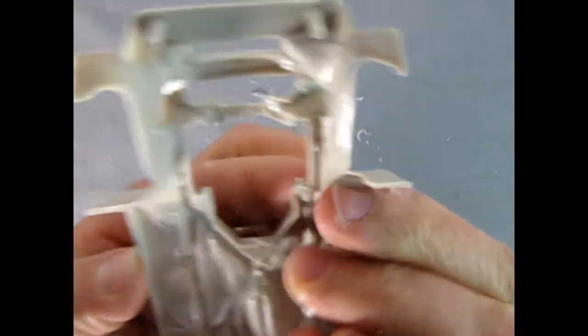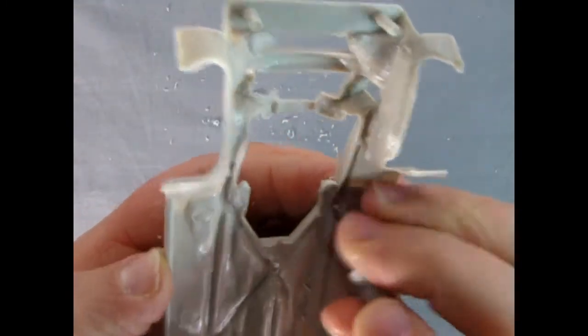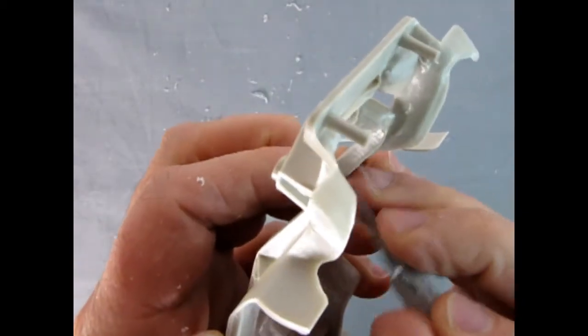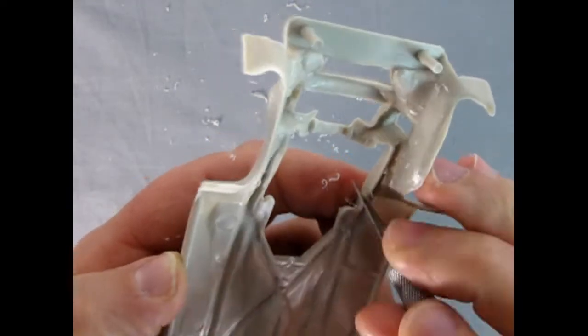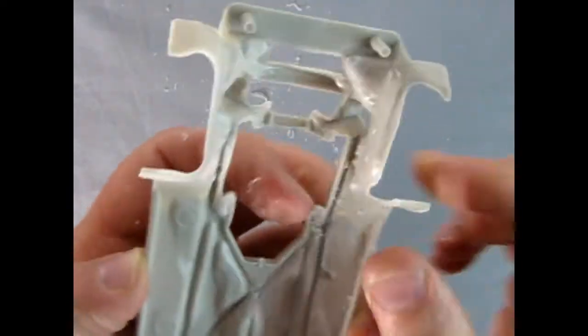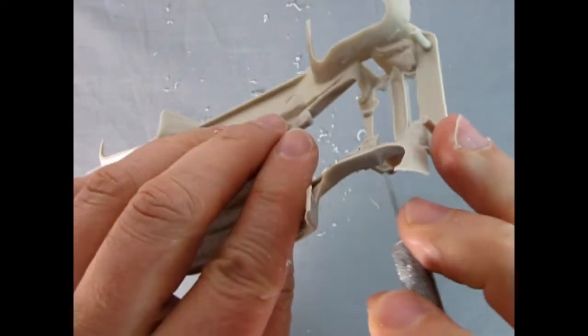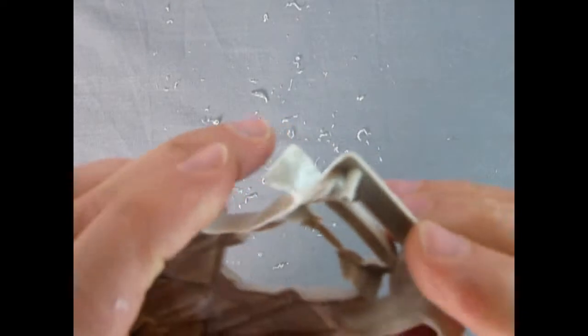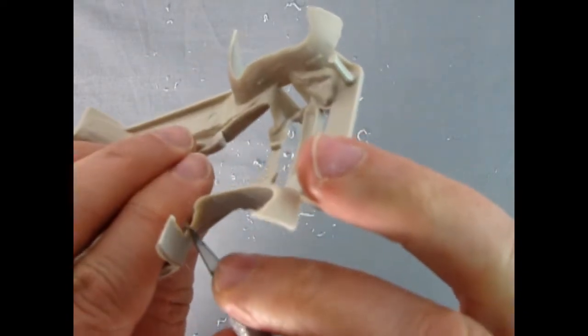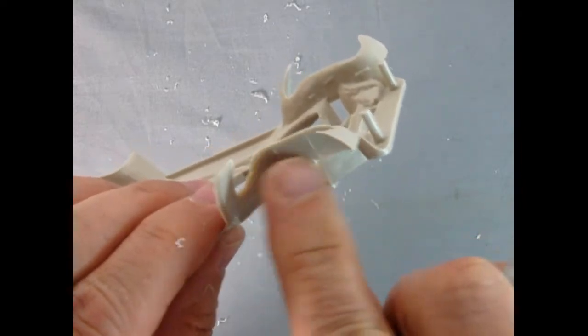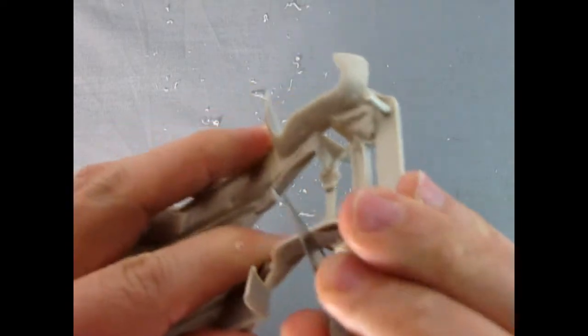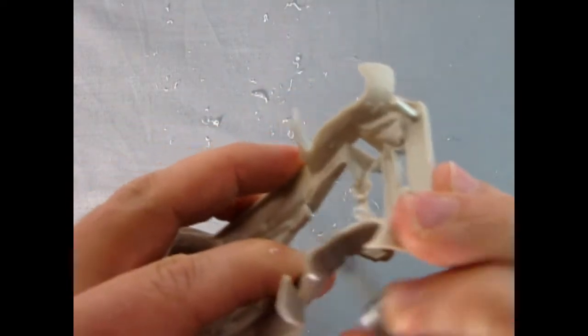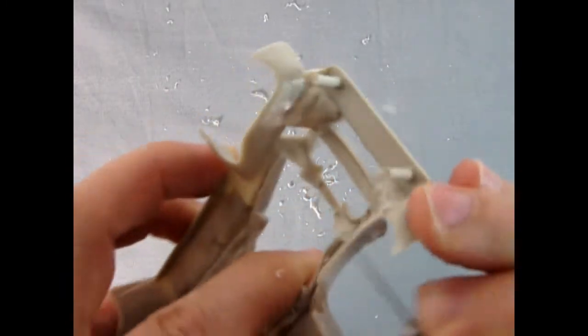Actually those are kind of inconsequential right now. For test fitting the body to this frame, where I really need to go is up in here on the top of these wheel arches. This is interesting because there's so much flash up in here it's kind of hard to figure where the top is actually supposed to be. Let's just use our adzing technique.